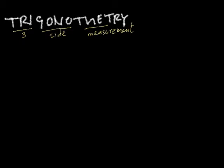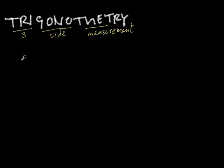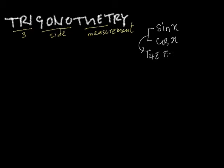The first question is: what are the trigonometric ratios? Trigonometric ratios are referred to as sine and cosine, but we don't just say sine or cosine — we say sine of some angle and cosine of some angle, like sine x or cos x. The symbols sine and cosine are called the trigonometric ratios.